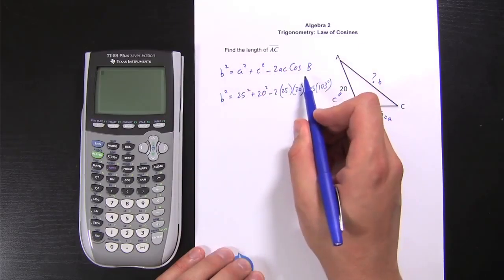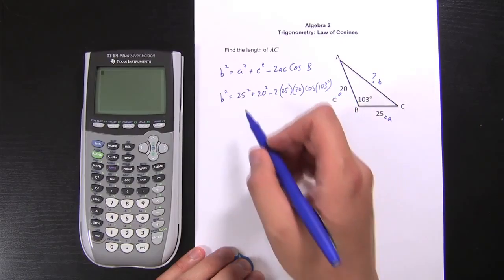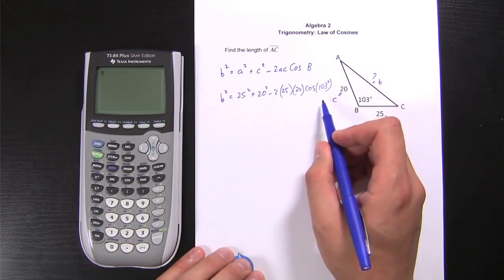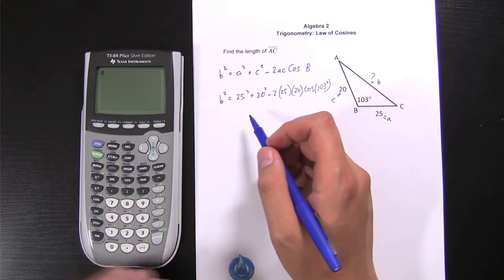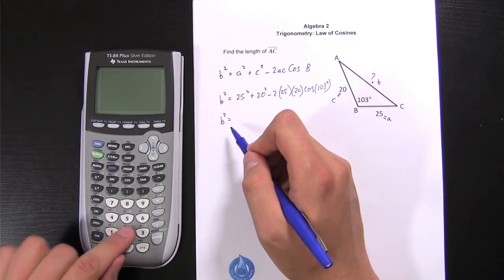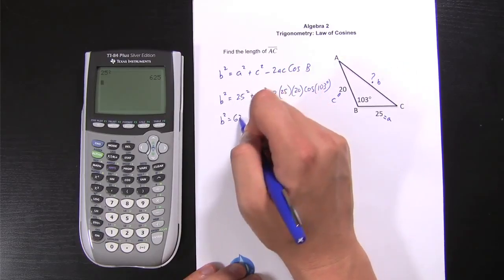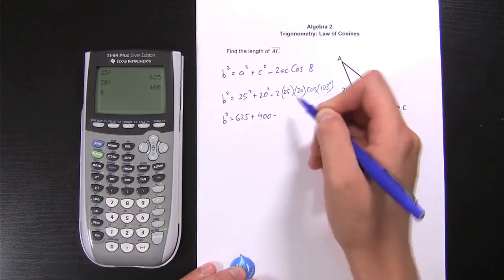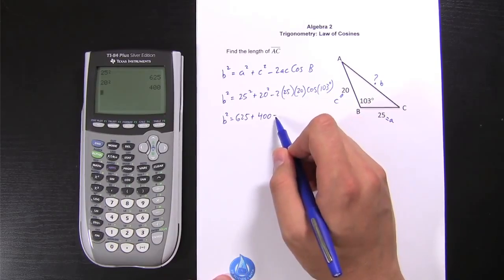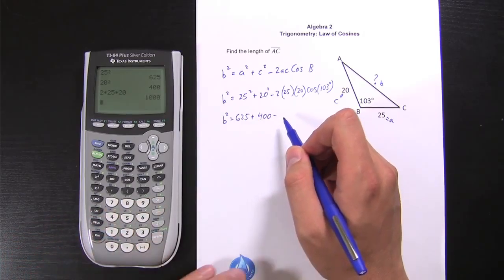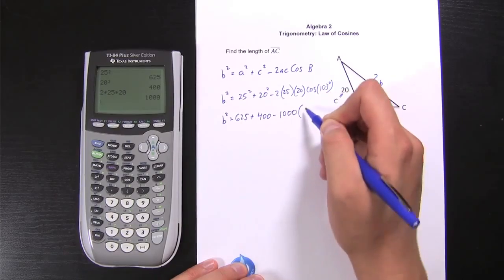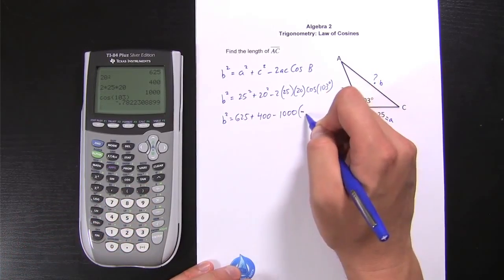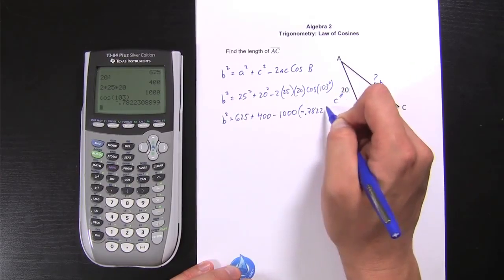Now, if it turns out that you use the wrong version of this, all you have to do is rewrite a different version and see if the numbers work out better in that different form. But for now, I know that this is going to lead me to the right answer, so I'm going to keep going. So just to make sure that I don't make any silly math mistakes, I'm going to take it real slow. I'm going to take 25 squared, and that is 625. 20 squared is 400. Now this piece right here, I'm going to multiply 2, 25, and 20. Of course, I've got to keep that minus sign, so 2 times 25 times 20 gives me 1,000. And then I'm multiplying this times cosine of 103. So the cosine of 103 is negative 0.7822. Let's just leave it like that.